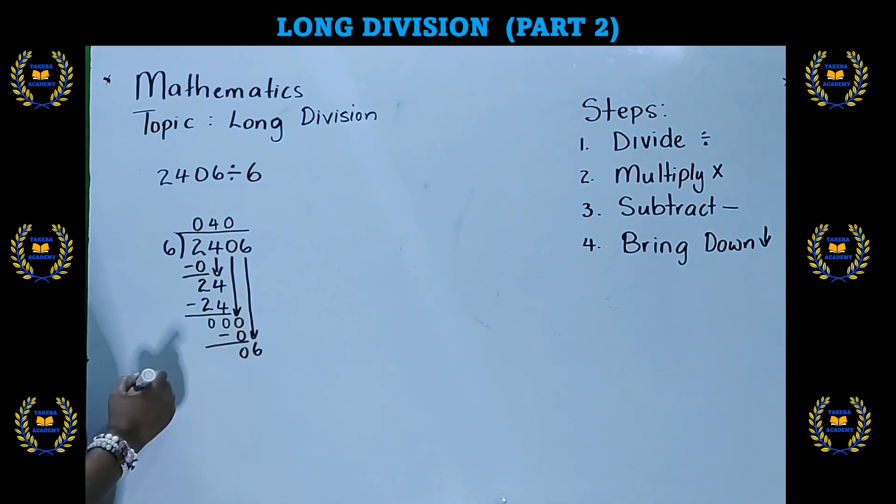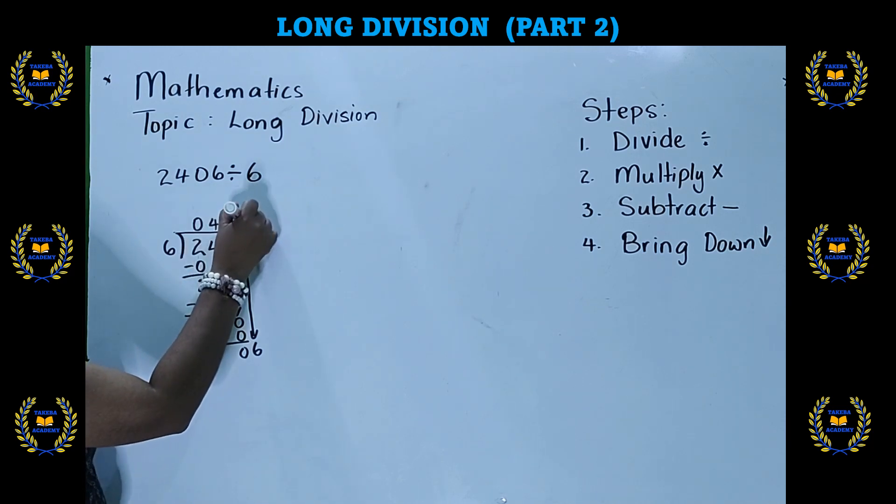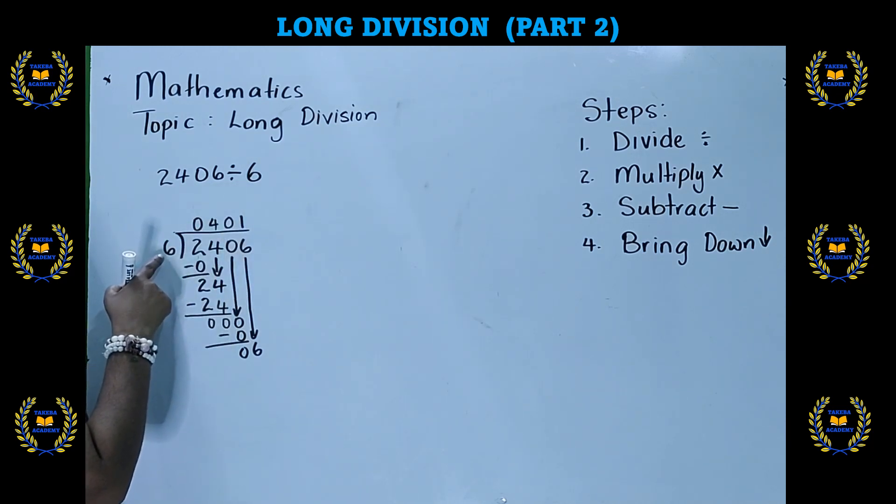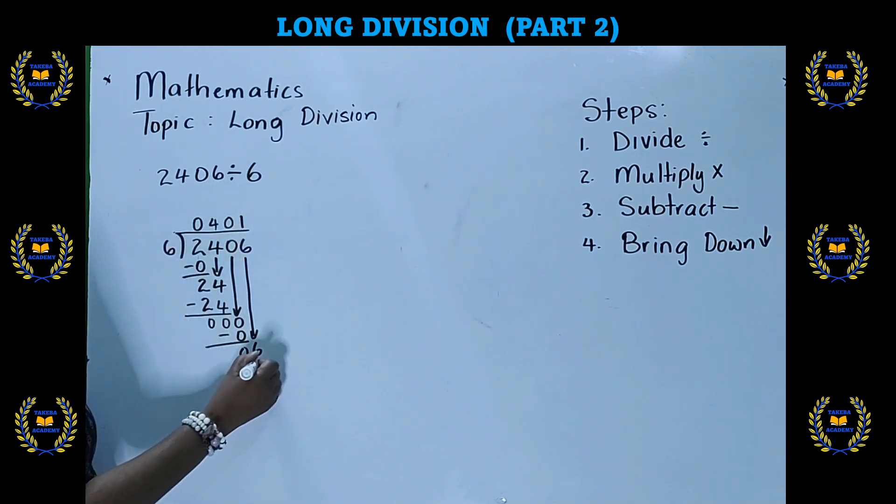Paying attention to where we bring the 6. So 6 divided by 6, the answer is 1. Second step, 6 times 1, that's 6. Third step, we subtract. 6 take away 6 is 0. There are no more numbers to bring down. So we are finished.